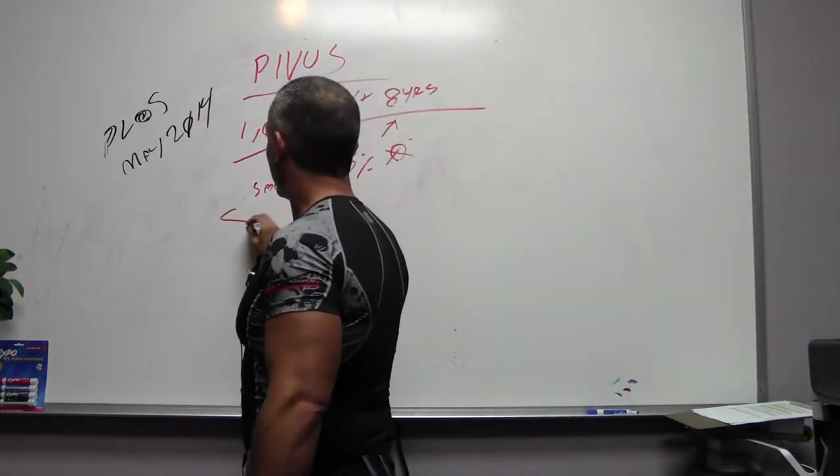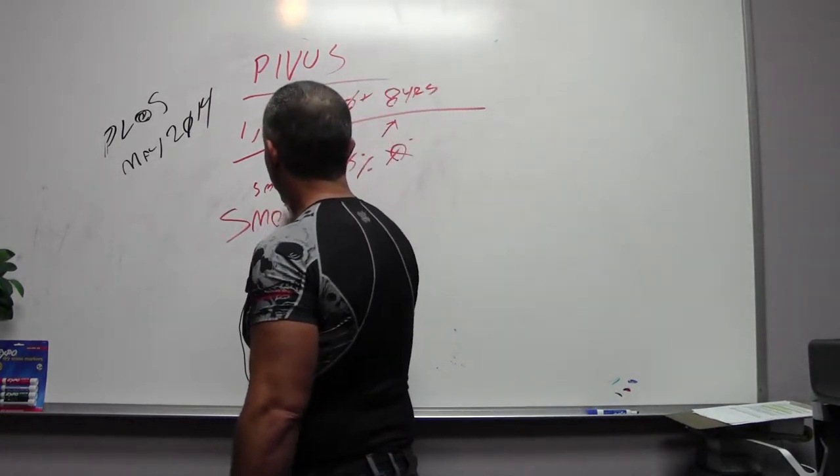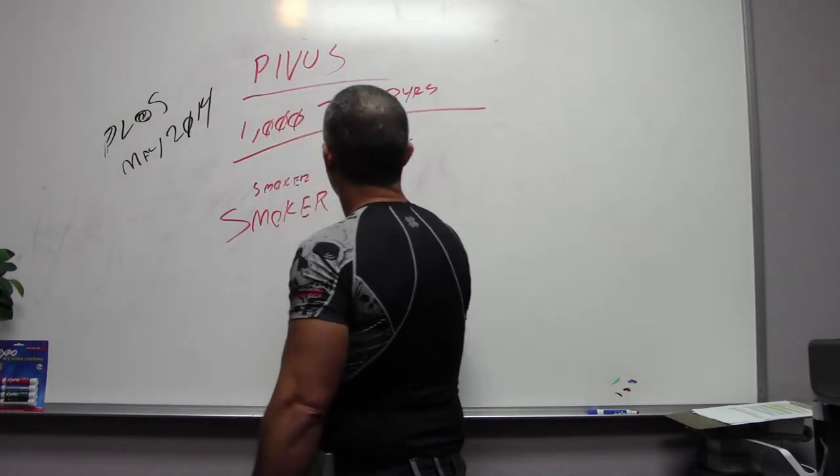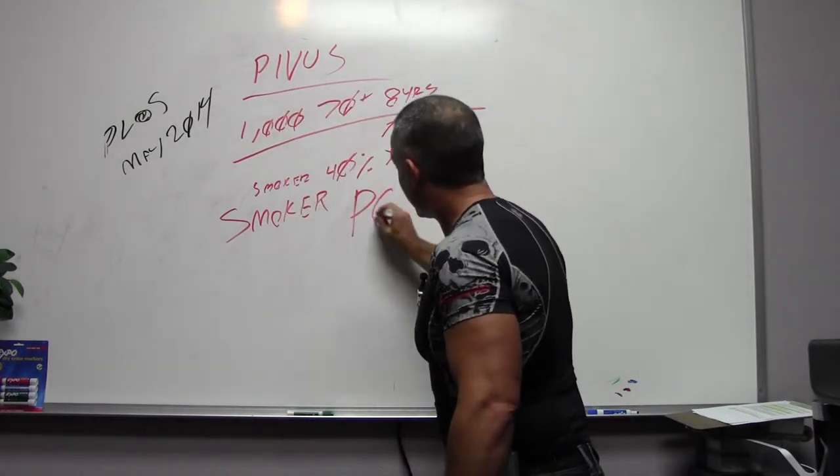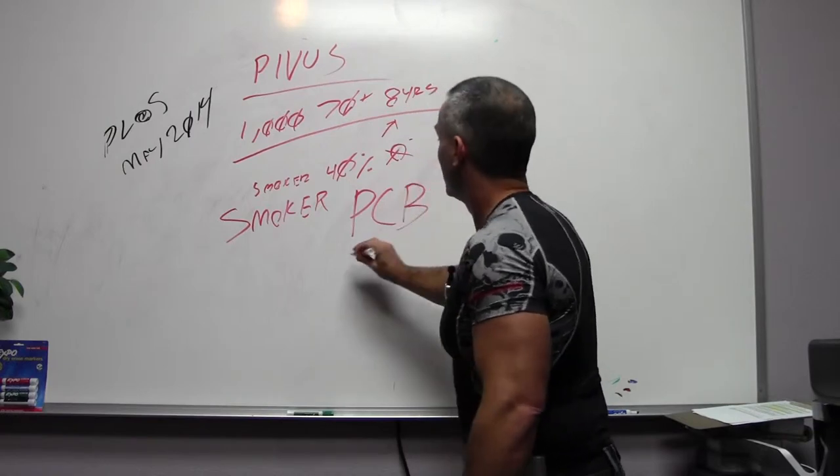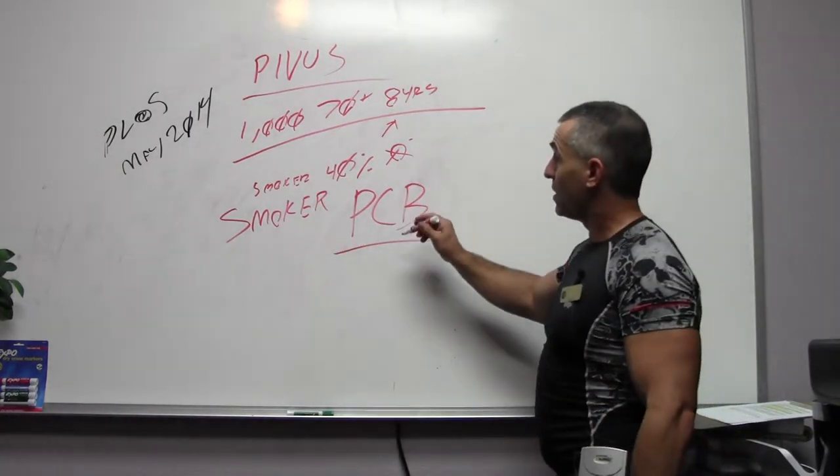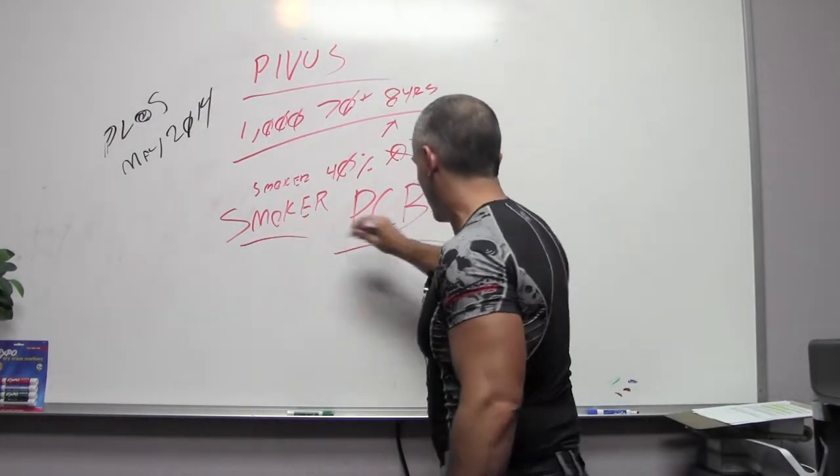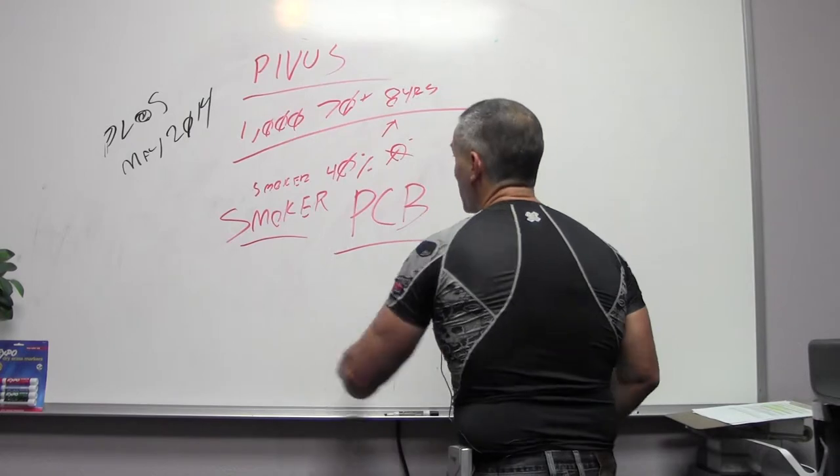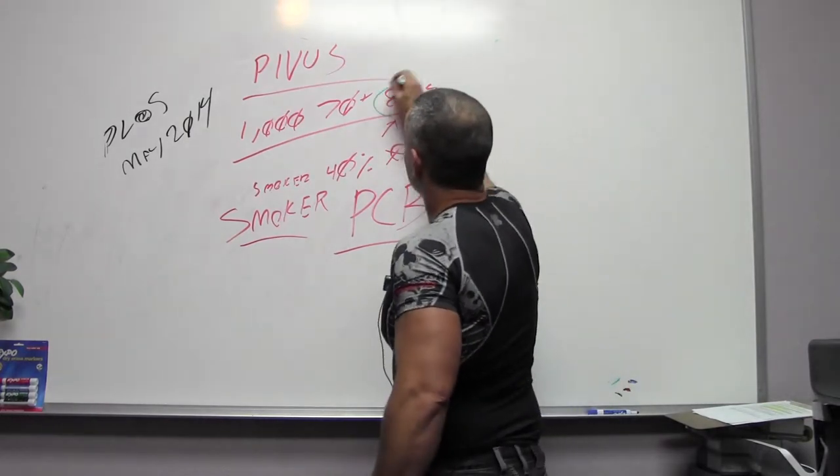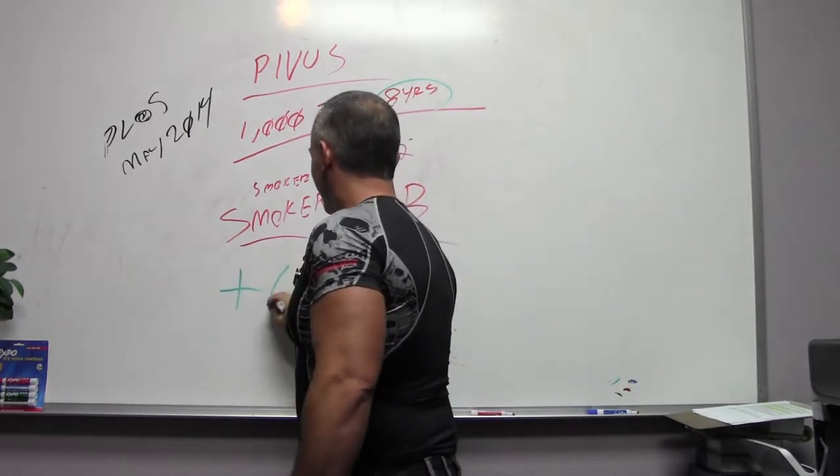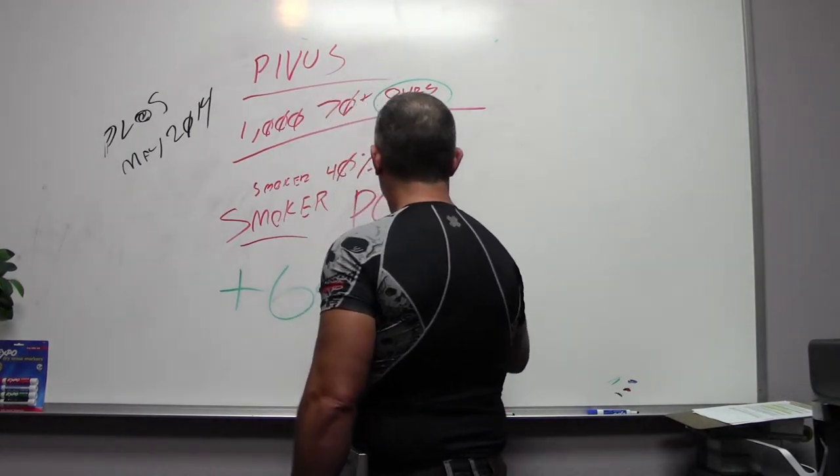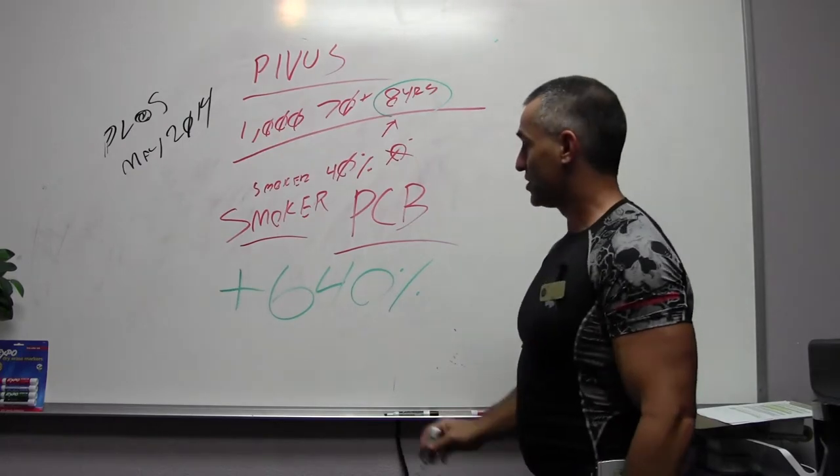But if you were a smoker and you had high levels of what's called PCBs, polychlorinated biphenols in the blood, your chance of dying over eight years was increased 640% over non-smokers.